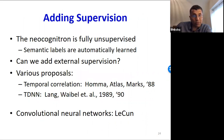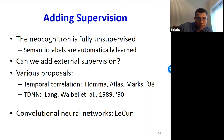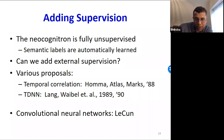Eventually people figured you can actually add external supervision. For time series models you had HOMA and ATLAS, MARX — temporal correlation work done at CMU. Kevin Lang had nice work on time delay neural networks invented here at CMU. Jan LeCun did this for two-dimensional networks — convolutional neural networks. All of them did this at more or less the same time.